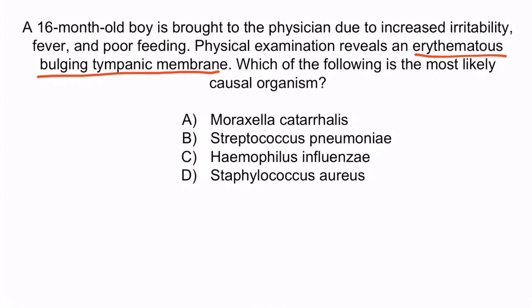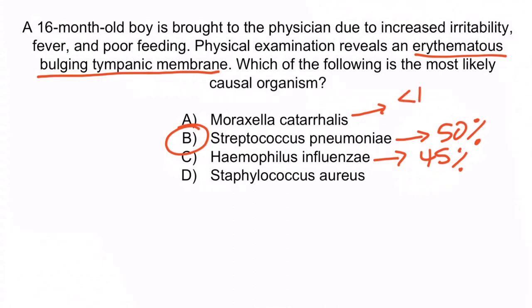For Step 1, you need to know that Streptococcus pneumoniae is the most common cause of otitis media in children, so B is the correct answer. Streptococcus pneumoniae accounts for approximately 50% of cases. Haemophilus influenzae accounts for approximately 45% of cases. And Moraxella catarrhalis accounts for less than 10% of cases. Staphylococcus aureus can cause otitis media but is much less common. The correct answer is B, Streptococcus pneumoniae. With that, you've learned everything you need to memorize about Moraxella catarrhalis.